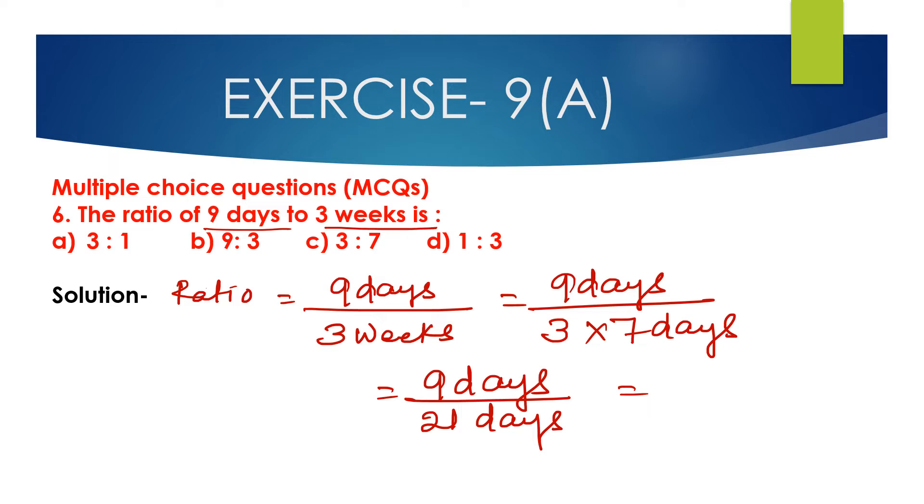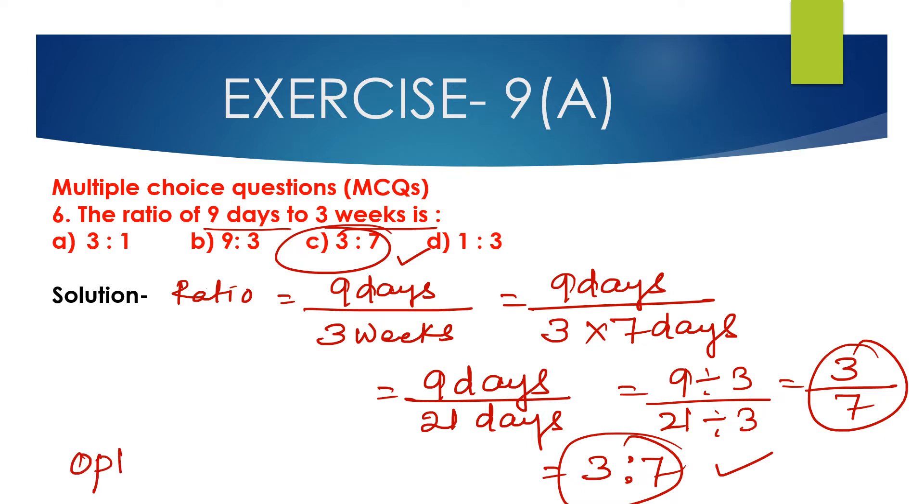Now 9 days divided by 3 multiply by 7 is 21 days. Now between 9 and 21, 3 is the common factor, so divide the antecedent 9 with 3 and 21 divided by 3 is 7. Now answer is 3 is to 7. So ratio of 9 days to 3 weeks is 3 is to 7. So option C, 3:7, is the correct answer.